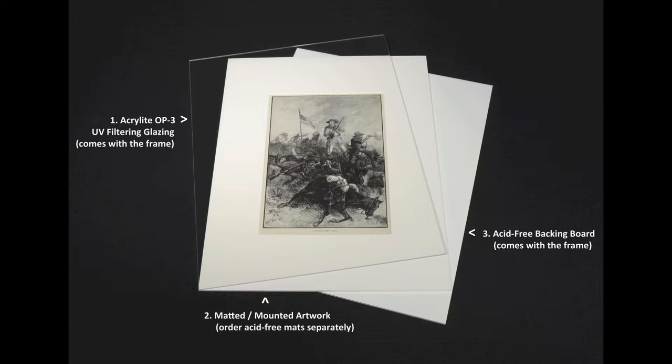The protective sheet removed from one side of the glazing, place it by the edges on top of your matted piece and carefully repeat the process. Next, place the acid-free backing board behind your matted work to form a three-piece unit.